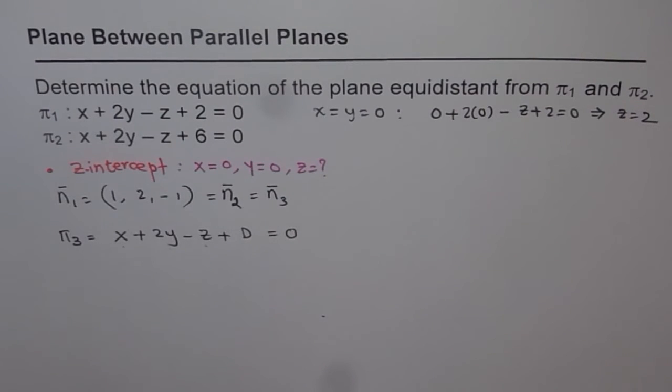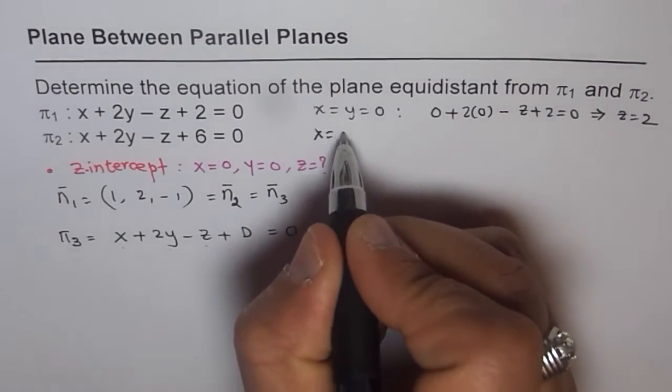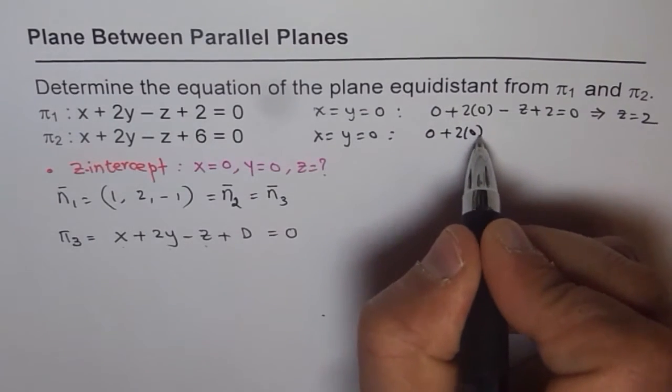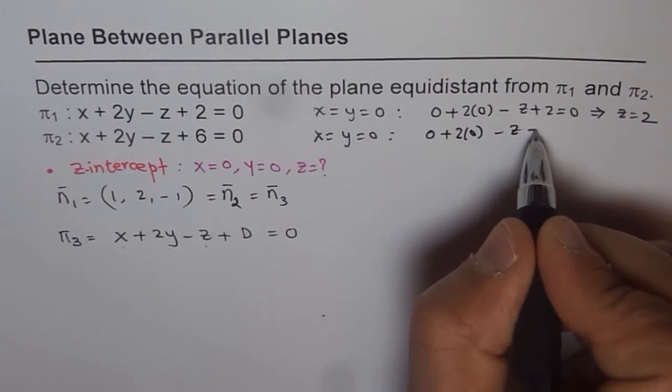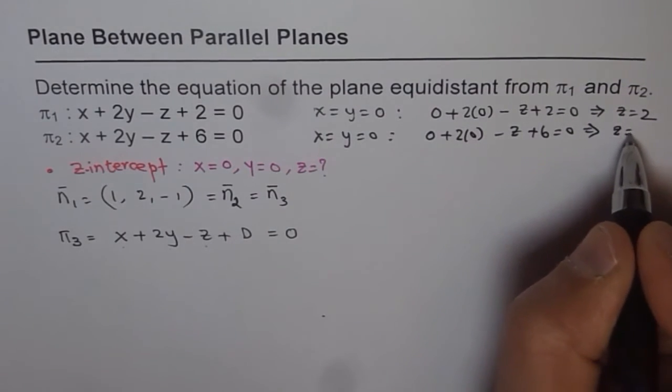Now, in the other equation, if I put the same thing, that is x = y = 0, what is the z-intercept? I get 0 + 2(0) - z + 6 = 0, and here I get z = 6.